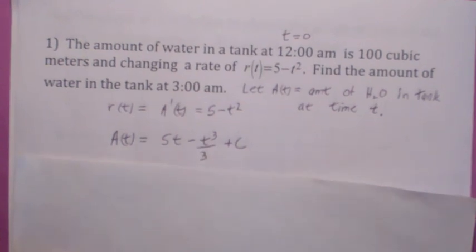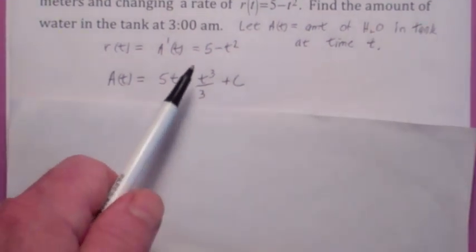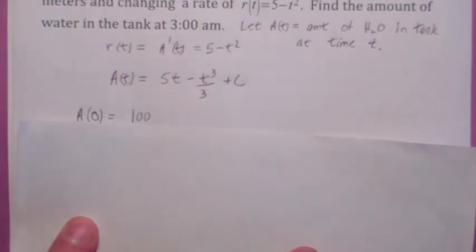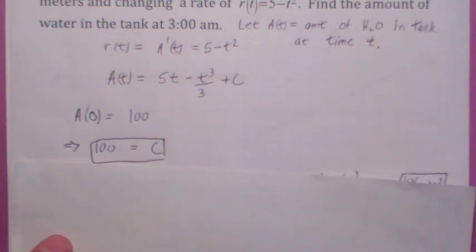So guess what? You use anti-differentiation to go from the derivative to the function. And you can use the initial condition that the initial amount, a of zero is a hundred, so you can find C. Otherwise, you wouldn't be able to do this problem.